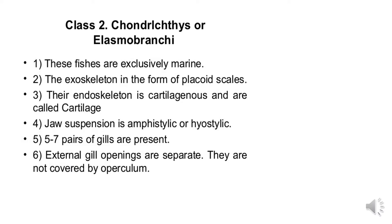The second class is Chondrichthyes, also called Elasmobranchii. These species are exclusively marine. The body is covered with placoid scales. The skeleton is cartilaginous. Jaw suspension is amphistylic, meaning jaws are directly connected with the cranium, while hyostylic means jaws are not connected with the cranium.